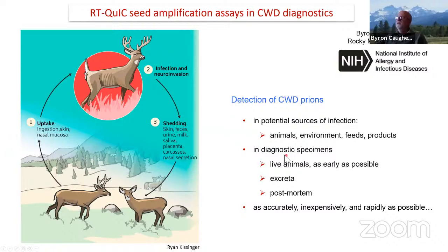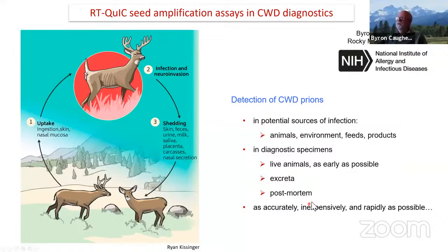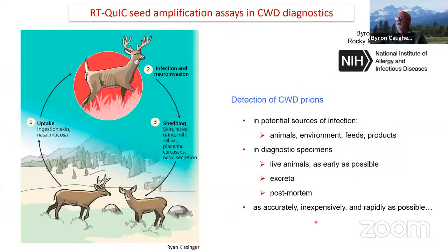Potential sources of infection include the animals themselves, the environments they occupy, feeds, and various products of these animals like the meats that hunters derive from hunting. We'd also like to detect CWD prions in diagnostic specimens, optimally in live animals and as early as possible, but also in excreta. There's importance in detecting them as sensitively as possible in postmortem samples as part of surveillance efforts, and to identify infected animals for hunters who have harvested these animals. We want to do all this as accurately, inexpensively, and rapidly as possible.